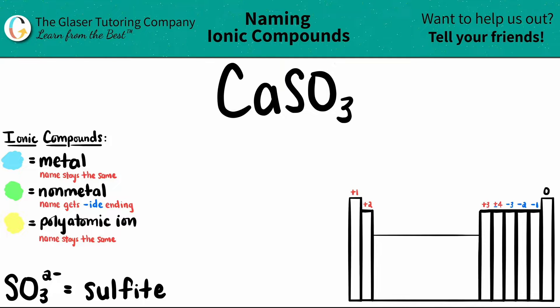Today, we are going to be finding the name for the ionic compound CaSO3.